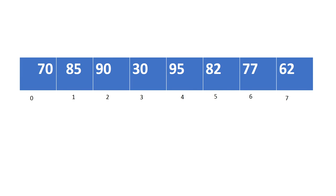We're going to use the same example from the previous videos where I have an array full of test scores. This array has eight elements ranging from index zero to seven. All these test scores have been entered in previously and we're going to try and find the max. When you see the array as one big complete picture, you'll find that the max value is 95. How did you find it — just by eyeballing it? Did you go left to right and compare values?